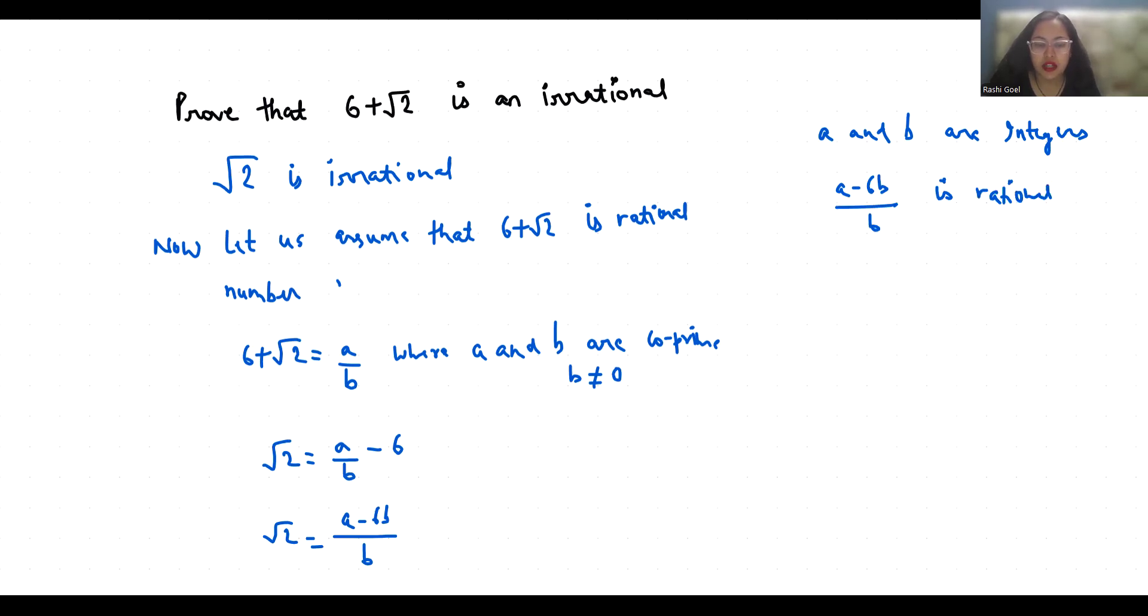If this number is rational and it equals root 2, then root 2 is also rational.